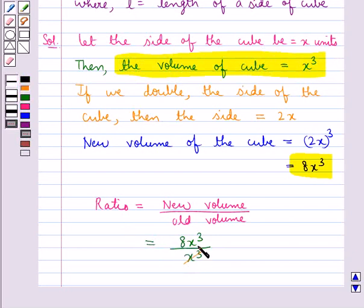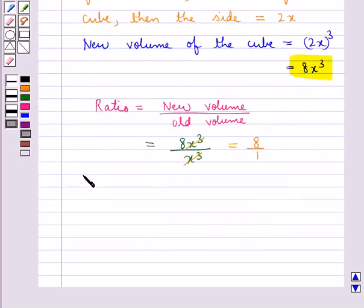Now x³ and x³ get cancelled, and this becomes equal to 8 upon 1. Thus, the volume will increase 8 times.